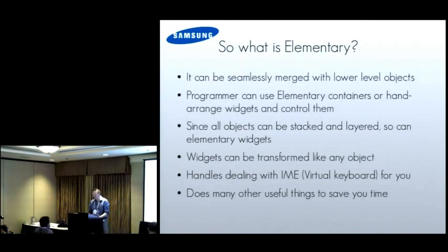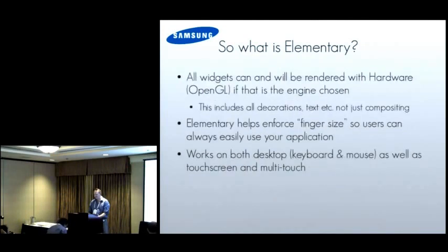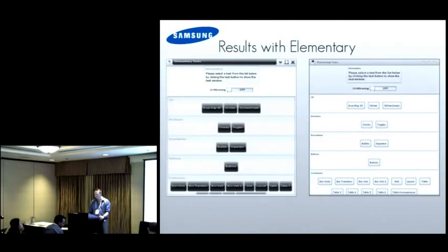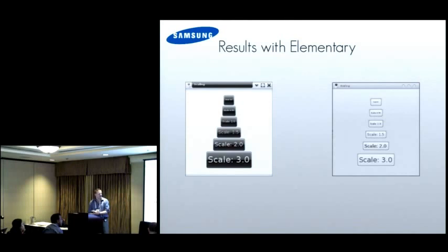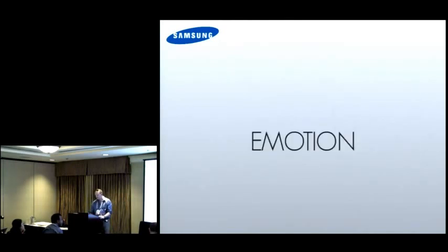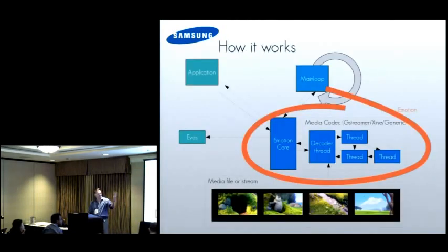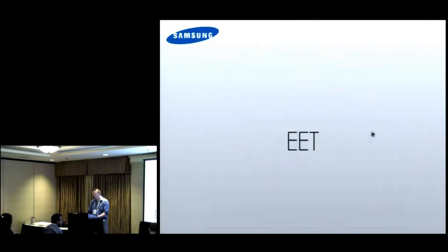It glues in with the input method handling and works with other stuff to save you time. Of course, everything gets rendered by the chosen engine. It enforces things like finger size. It works on both desktop and touch screen - when you're on touch screen, you just go and drag with your finger; change mode to desktop and get a little scroll bar and drag via that. You don't have to modify the application at all to make that work. You can also change the look - theming. Widgets can be scaled happily up and down. Emotion does video - it glues things together, it's very easy. Adding an Emotion object - create object, init, set file, set size. It sources the video for you, does all the threading, threaded decoding, glues it into the image surfaces. YUV acceleration via OpenGL for YUV, or software to decode.